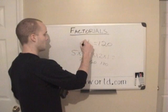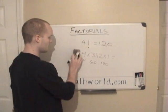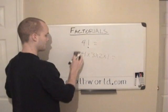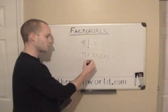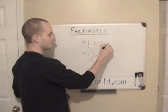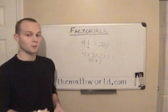So if we just did 4 factorial, then it would be a little simpler. 4 times 3 is 12, times 2 is 24. So 4 factorial is 24.